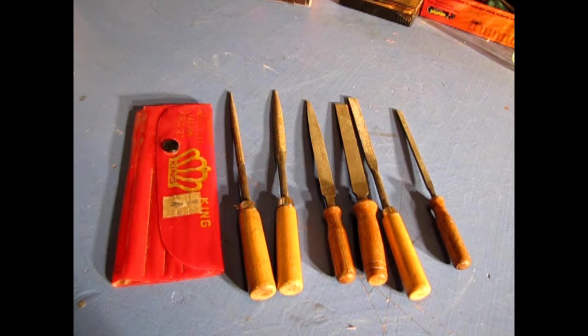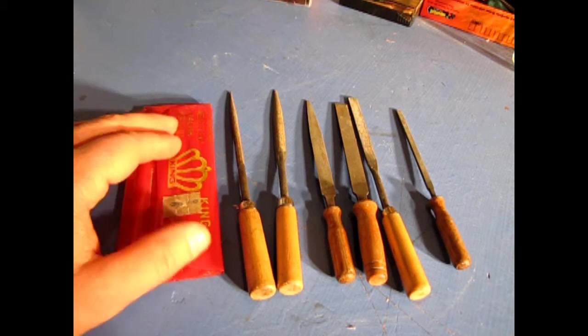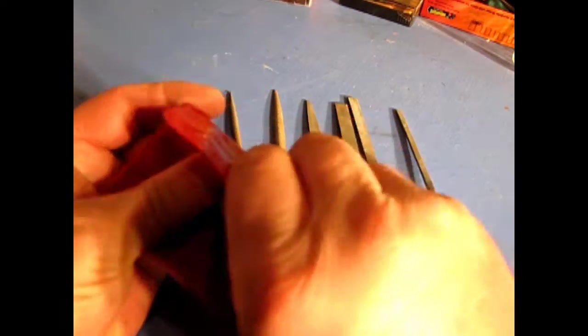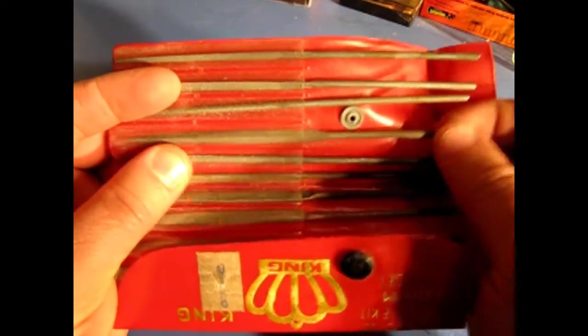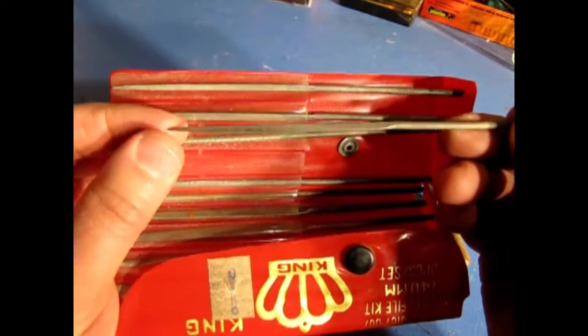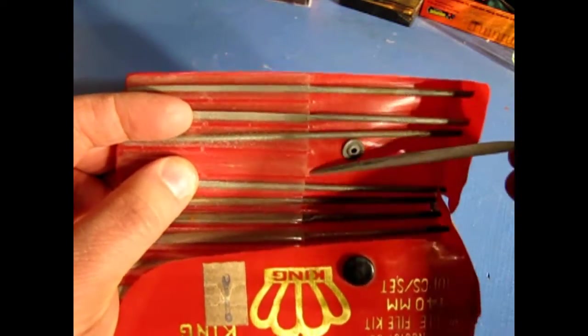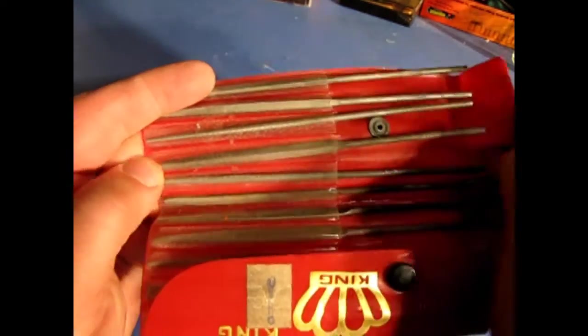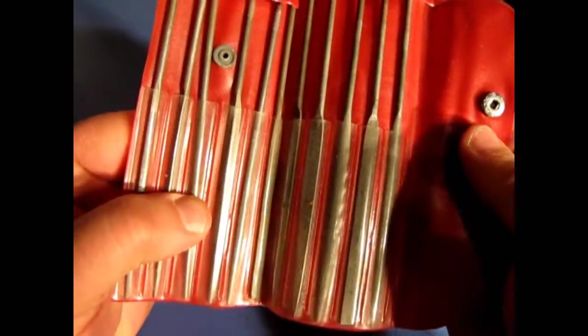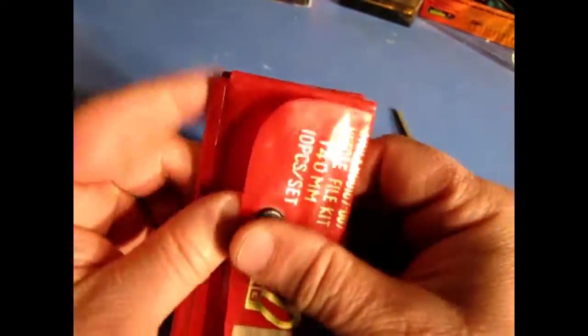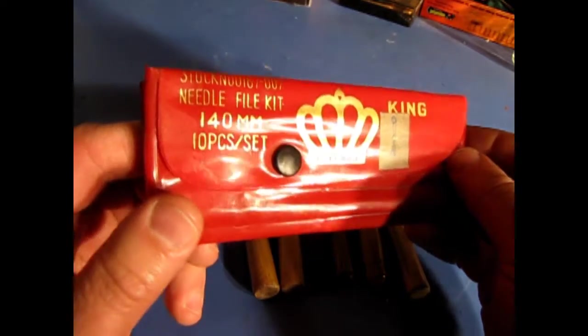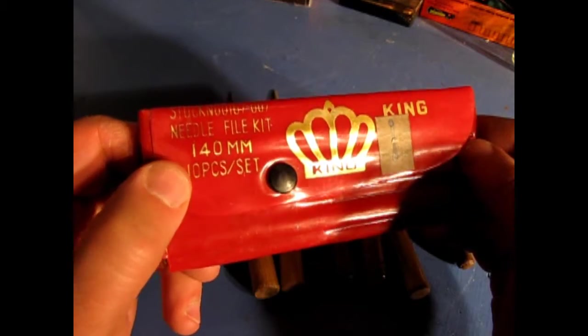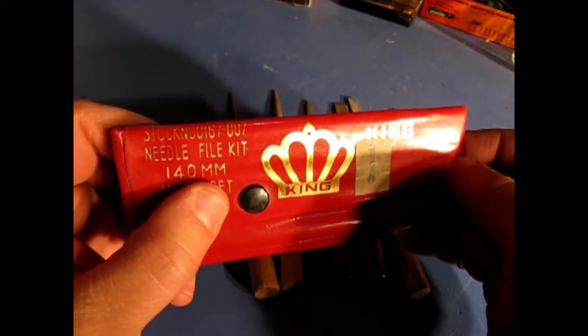Now our next set of tools that we like to use here are these files. And they come in a variety of shapes and sizes. This is a set of files, rather small. And you can take them out of the package. This set of files has different types of designs. Some are circular, some are triangular, some are triangular with a point. This is an old King set. I don't know if they still make them. But there's 10 of them in there, 140 millimeters long. Sometimes you can find these in dollar stores.